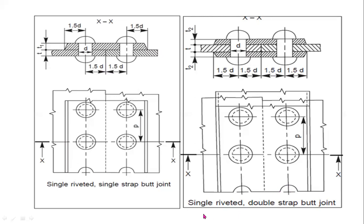According to Indian standards specifications, rivets may be made either by cold heading or by hot forging. If rivets are made by cold heading, they shall subsequently be adequately heat treated so that the stresses set up in the cold heading process are eliminated. If they are made by hot forging, care shall be taken to ensure that the finished rivets are of the first-class grade.